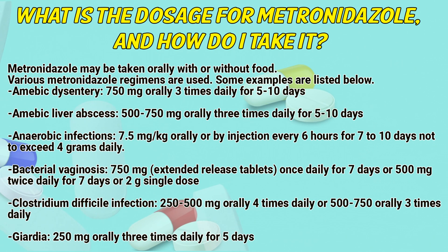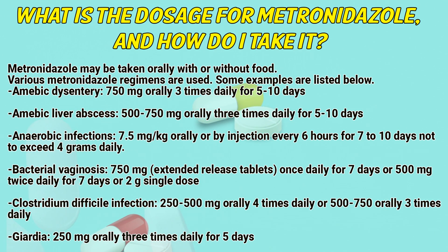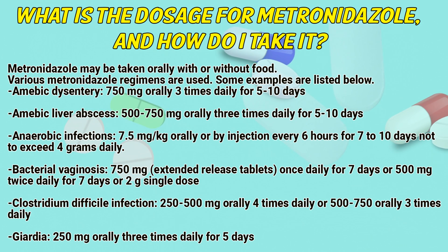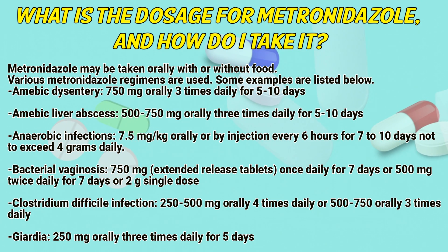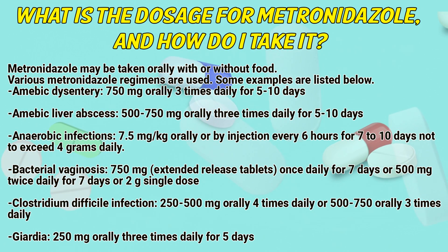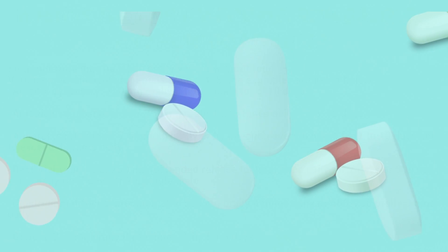Bacterial vaginosis: 750 mg extended release tablets once daily for 7–10 days, or 500 mg twice daily for 7 days, or 2 g single dose. Clostridium difficile infection: 250–500 mg orally 4 times daily, or 500–750 mg orally 3 times daily. Giardia: 250 mg orally 3 times daily for 5 days.